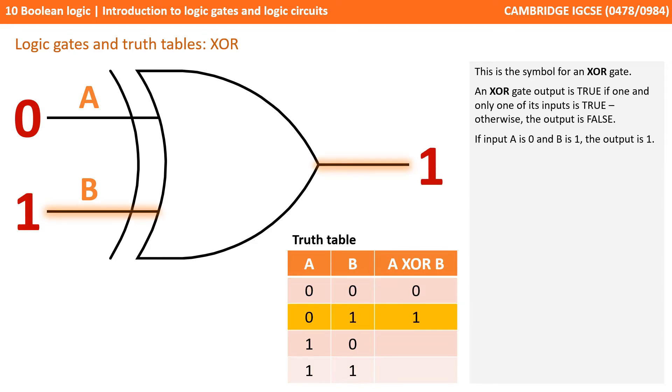If A is 0 and B is 1, the output is 1. If A is 1 and B is 0, the output is 1. And finally if A is 1 and B is 1, the output is 0.